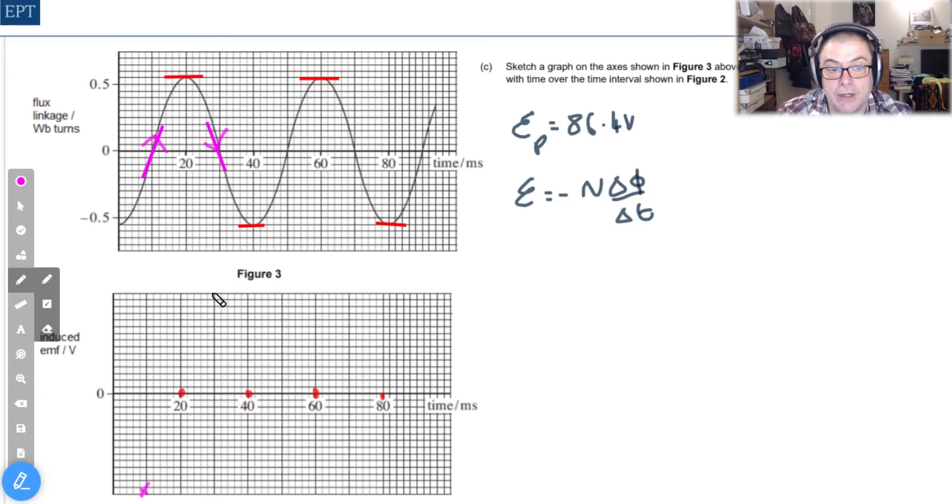And I'm just making arbitrary units up here so I'm going to use the complete length of the graph. Now for our second point we see that the gradient is maximum negative, i.e. minus 86.4 volts, but we have to multiply again by minus 1 because of Lenz's law and so it becomes a positive value.